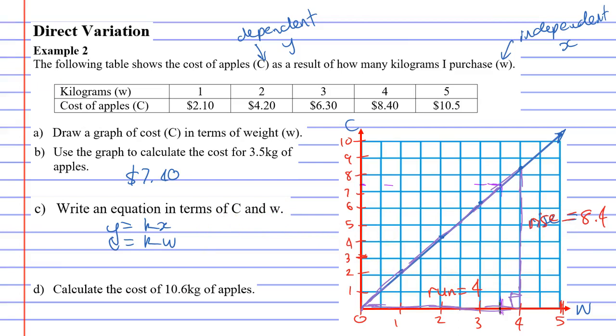So we calculate our gradient, which is usually M, by doing rise over run or 8.4 over 4. And that will come out to 2.1. Therefore, K is 2.1. So C equals 2.1W.